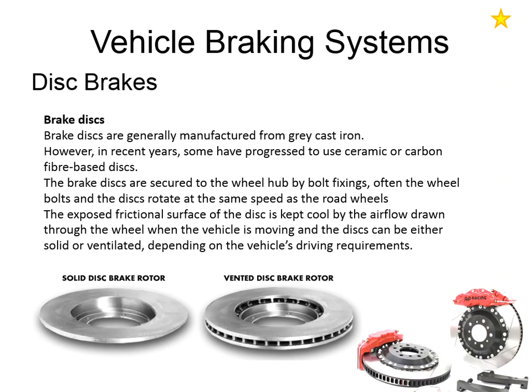Brake discs are generally manufactured from grey cast iron — a really good, easy material to machine with good heat stability, which is why it's the material of choice. On some high-performance vehicles you might find ceramic or carbon fibre-based discs, but for the vast majority of vehicles they're manufactured from cast iron. The brake disc is attached to the wheel hub — typically bolted, or quite commonly using the wheel bolts themselves — and turns at wheel speed. By slowing down the rotation of the brake disc, we slow down the wheel.